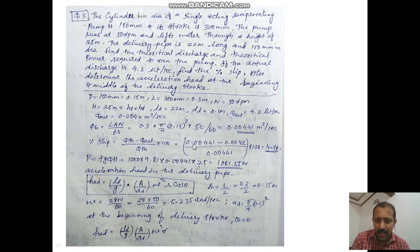The theoretical power required to run the pump. P is rho g Q H. We know the values, so substitute those values here. We have two discharges: Q theoretical and Q actual.